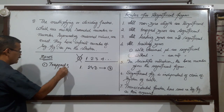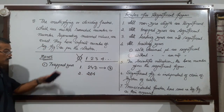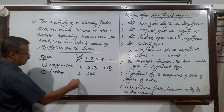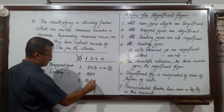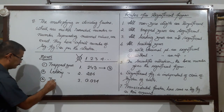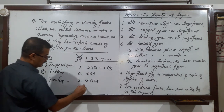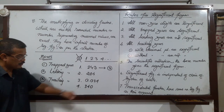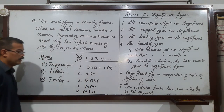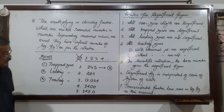For example, a trapped zero is in a number like 2-0-4. Point number two is a leading zero — for example, 0.34. Number three is a trailing zero — for example, 3-4-0. Number four and five: trailing zero with and without a decimal point — 3-4-0. with decimal and 3-4 without.